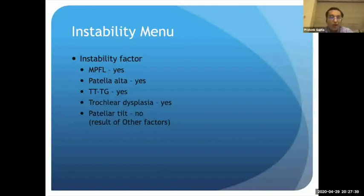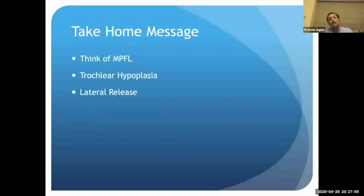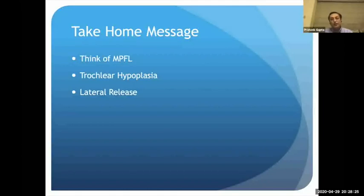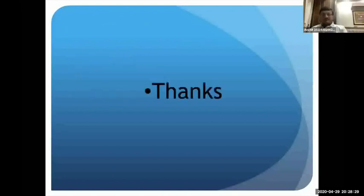In summary, MPFL injury, patella alta, increased TT-TG distance indicating abnormal tibial tubercle position, and trochlear dysplasia all play major roles in patellofemoral instability. Patellar tilt due to tight lateral structures is generally secondary to other problems; thus isolated lateral release should be discouraged and used only as an adjunct. Trochlear hypoplasia must be specifically identified, as failure to recognize it is the commonest reason procedures fail. MPFL reconstruction is almost always part of any patellofemoral correction.